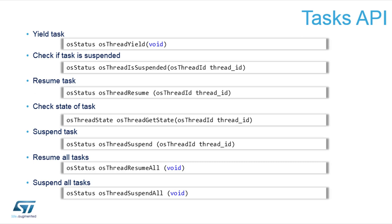You can test if a thread was suspended by calling thread is suspended with its ID. It will return whether the thread was put into the suspend state or whether it's in blocked, ready, or running state. You can resume a suspended task, and you can check the state of a task to detect whether it's ready, blocked, or suspended. You can also resume and suspend all tasks. This is very useful when you want to stop execution of everything and, for example, wait for an interrupt to resume. So if you want a lower power mode, you can stop everything, and on a button press that will resume all tasks — you return to full functionality.